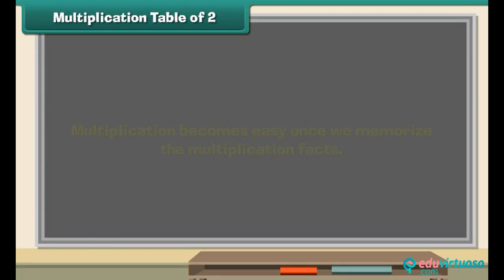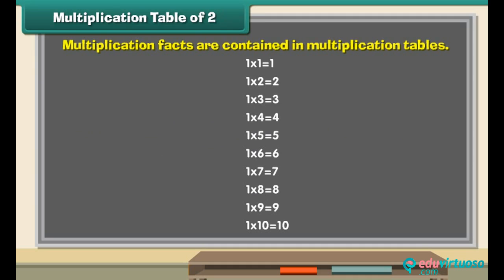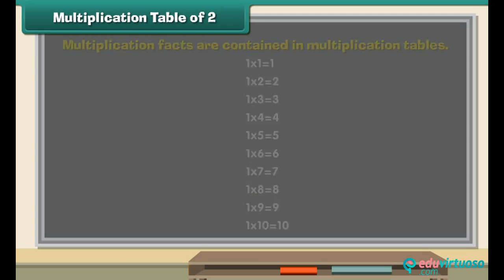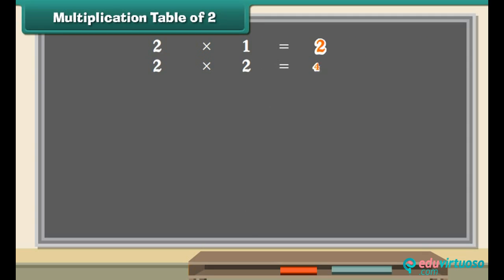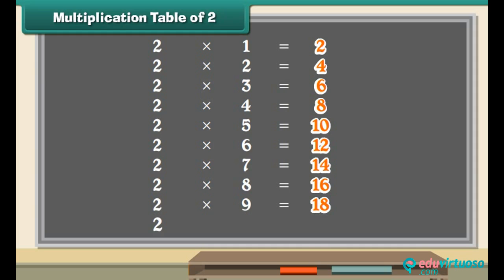Multiplication becomes easy once we memorize the multiplication facts, which are contained in multiplication tables. Let us start with the multiplication table of 2: 2 ones are 2, 2 twos are 4, 2 threes are 6, 2 fours are 8, 2 fives are 10, 2 sixes are 12, 2 sevens are 14, 2 eights are 16, 2 nines are 18, 2 tens are 20.